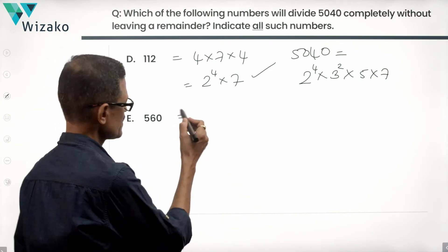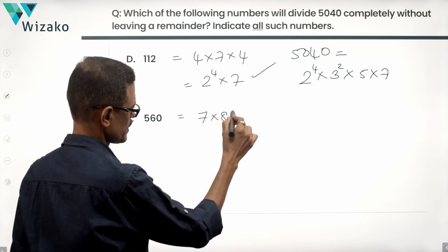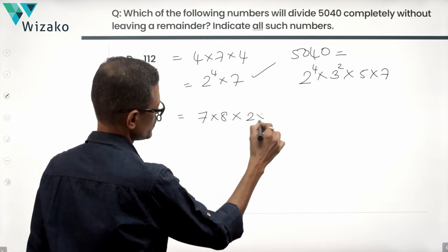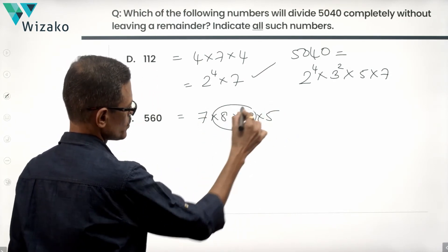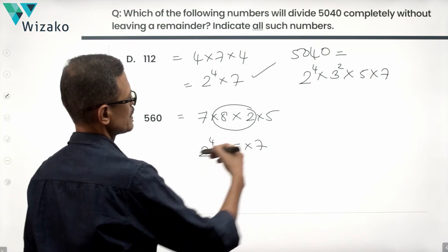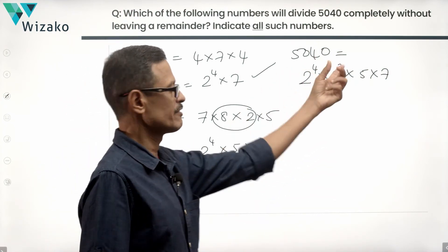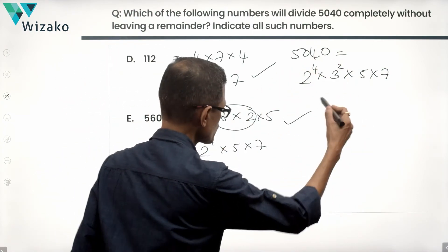560, which is 56 into 10. We will first write it that way. 7 into 8, 56 into 10. We will write it as 2 into 5. 8, 2's are 16, which is 2 raised to the power of 4 times 5 times 7. Will this number, is this contained in 5040? Yes. 2 power 4, 5, 7. So 560 will also divide this number.